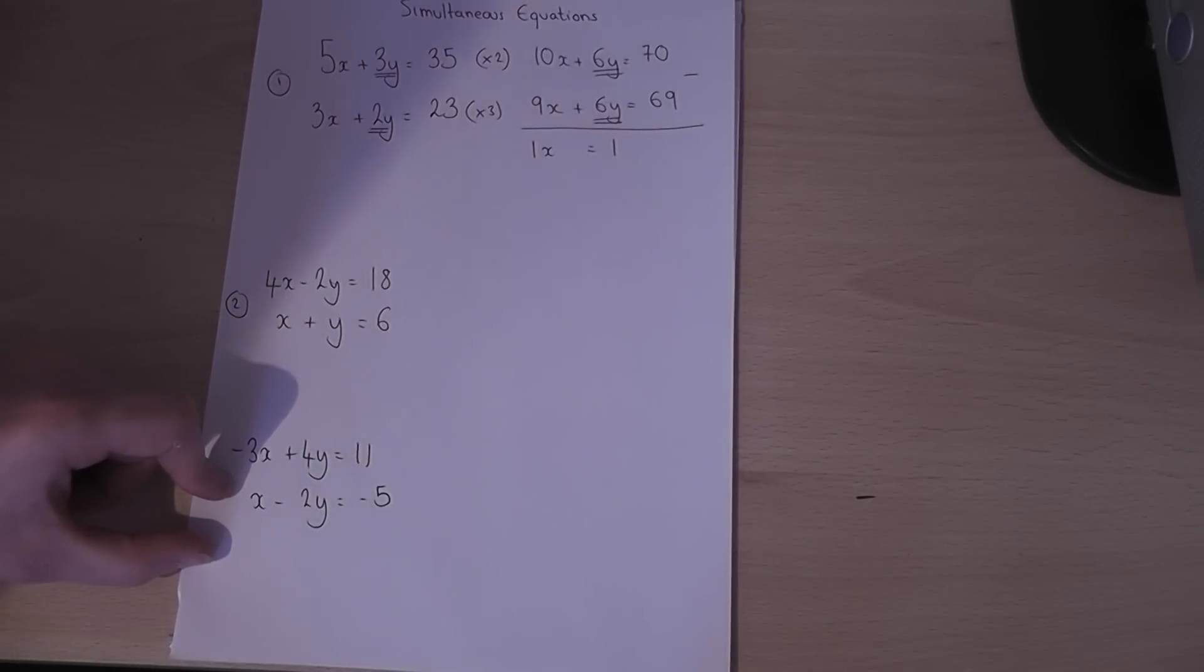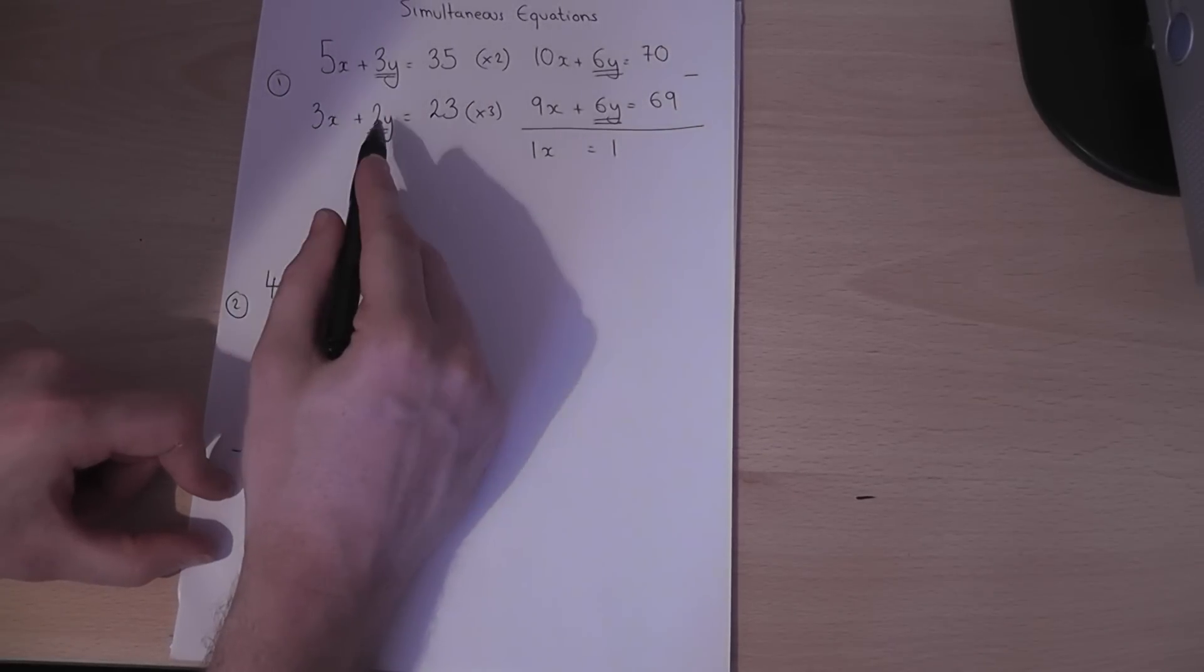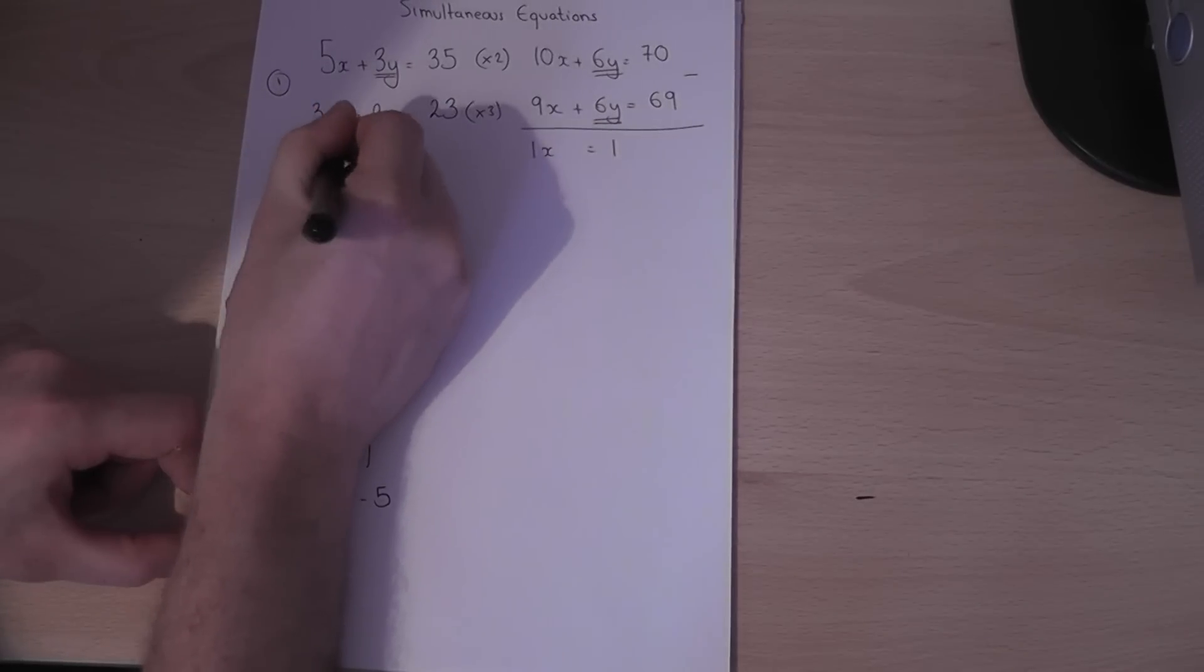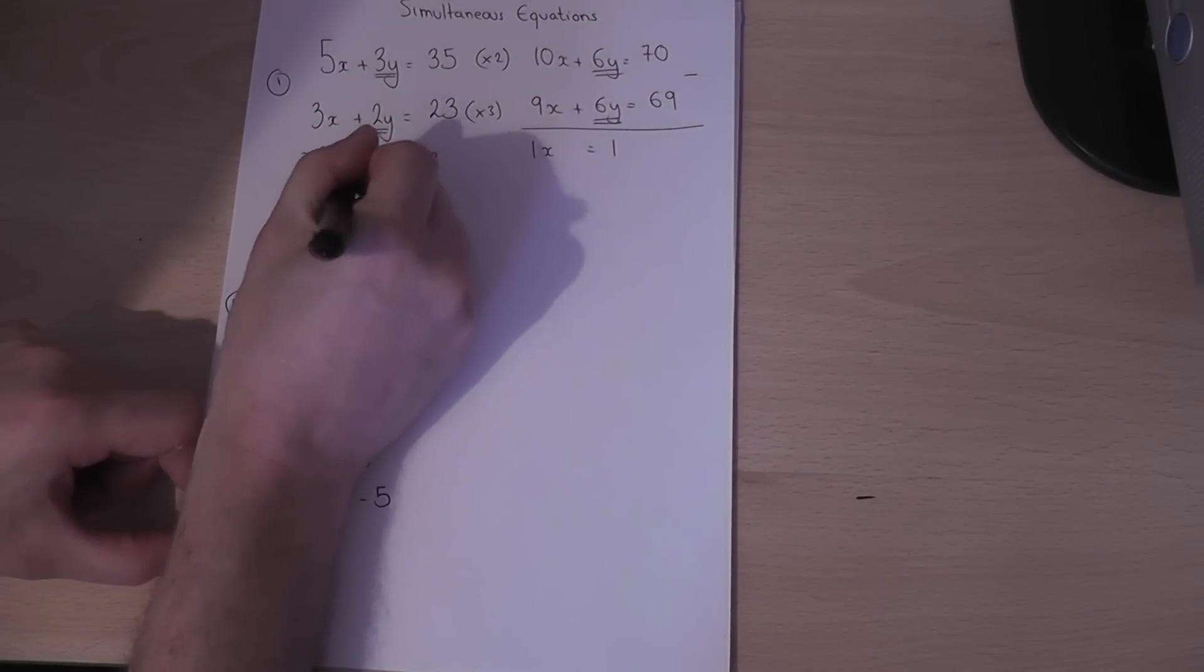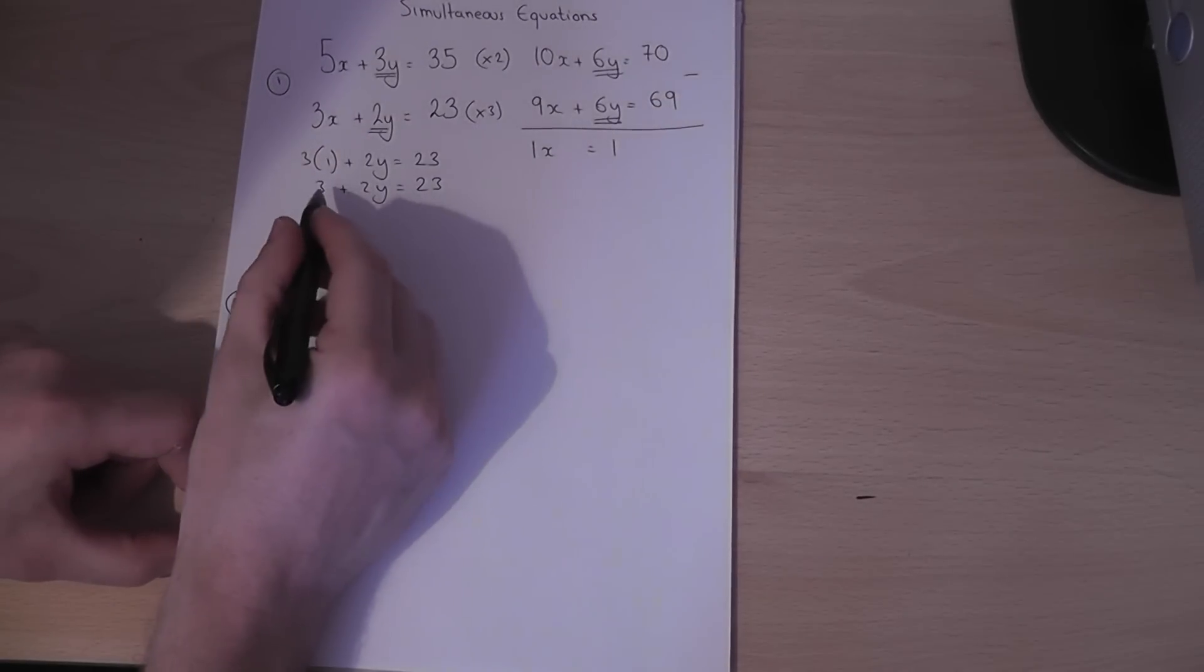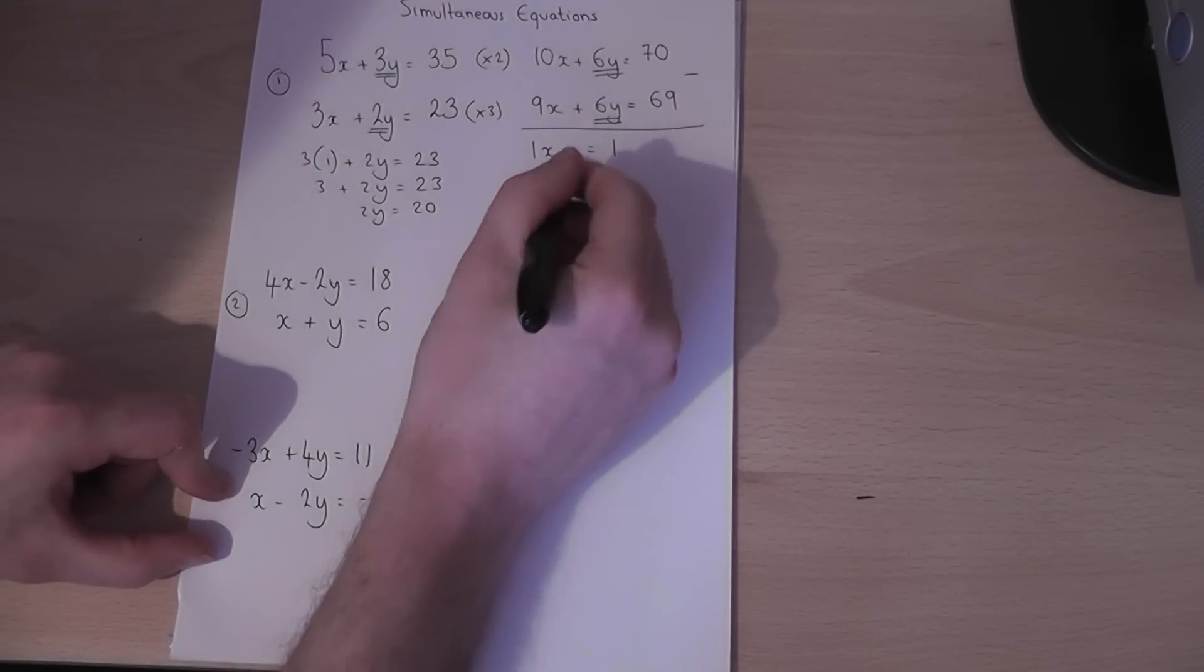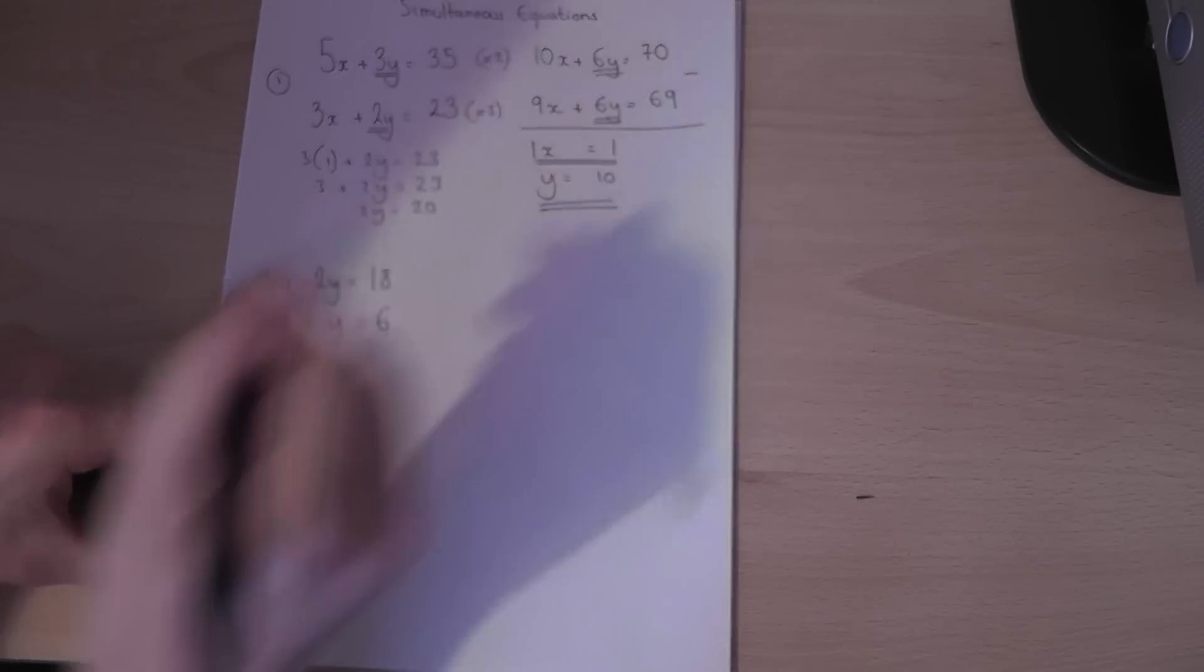I now just want to find what the second letter is, i.e. y. I pick any of these equations. This looks the simplest to me. Now because I know x is equal to 1, I can replace the x here by 1. So 3 lots of 1 plus 2 lots of y equals 23. Now 3 times 1 is 3 plus 2y equals 23. 2y must equal 20. In other words, y must equal 10. So x equals 1 and y equals 10. These are the solutions to the two simultaneous equations.